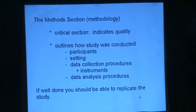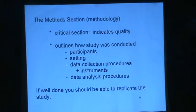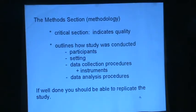The third section is methodology, which is a critical section and a good indication of research quality. It should outline how the study was conducted, who the participants were with relevant demographic information, the setting, data collection procedures, and whether instruments used have reliability and validity data. What were the data analysis procedures? A well-done methodology section should be like a recipe in a cookbook — step-by-step, so if you wanted to replicate the research, it would be straightforward.